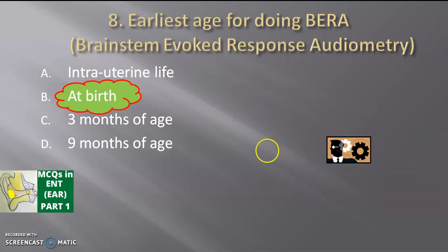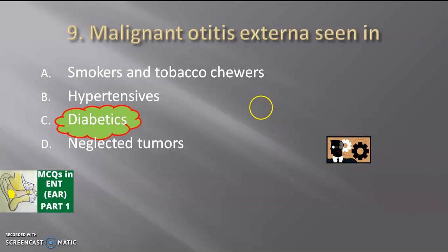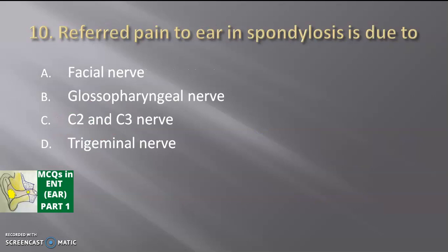Next, malignant otitis externa is seen in — smokers and tobacco users, hypertensives, diabetics, or neglected tumors? The answer is diabetics. Despite its name, malignant otitis externa is not related to malignancy, smoking, tobacco, or hypertension. It is an infective condition of the outer ear — the pinna and external auditory canal — common in immunocompromised or diabetic individuals. The infection is severe in nature, hence it appears malignant, but it is not a true malignancy.